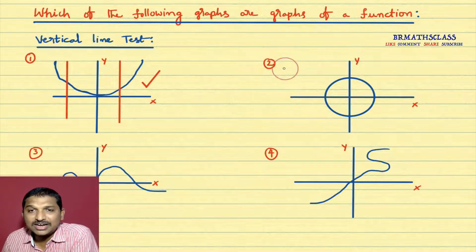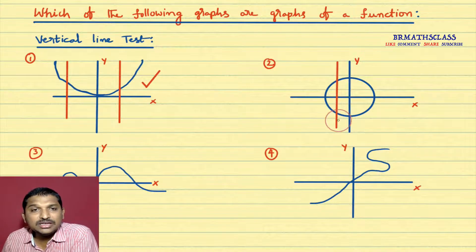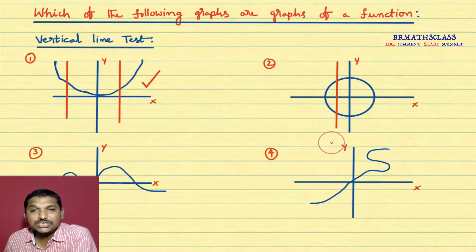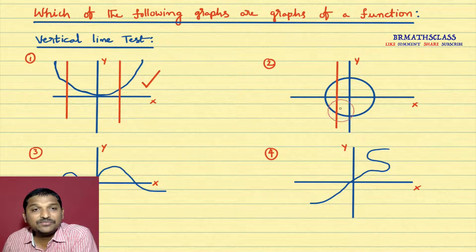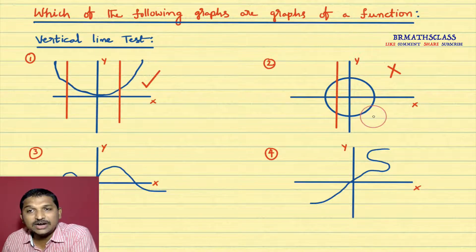Now you come to the second example. Draw one vertical line to the graph — I'll draw a vertical line here. You observe that this vertical line cuts the graph at two points. What does that tell us? The definition of function says that for every element in the first set, there exists a unique element in the second set. But here, for this x value, there exist two y values. It fails to satisfy the definition of a function. That's why we say that this graph is not a graph of a function.